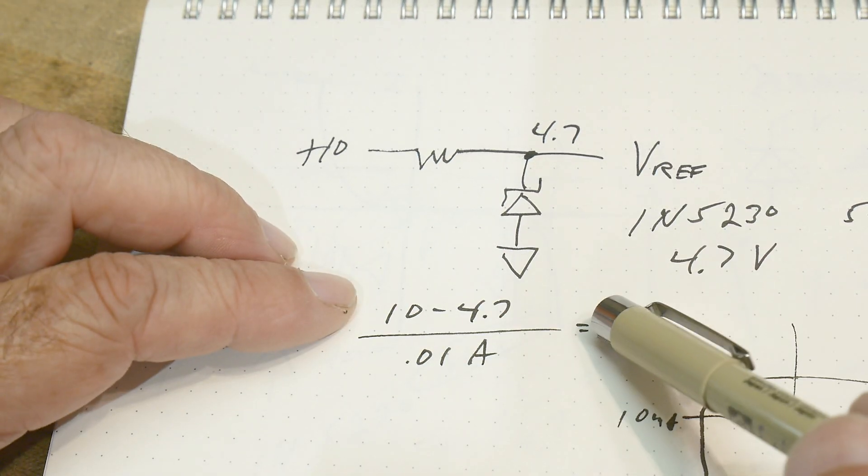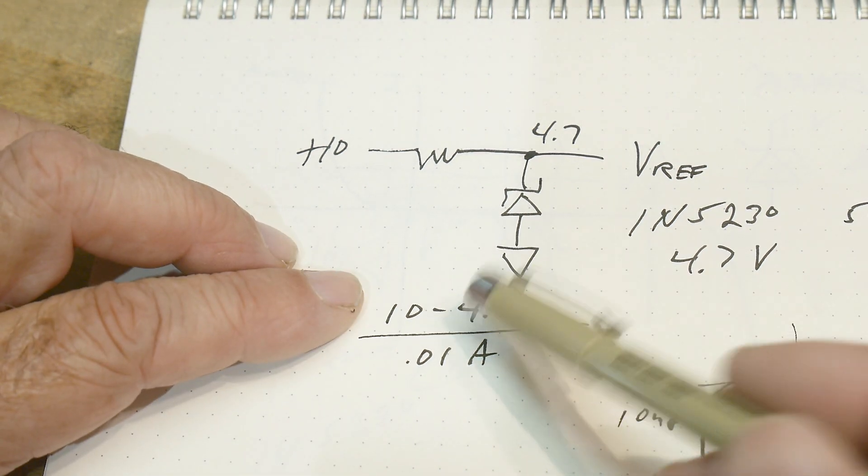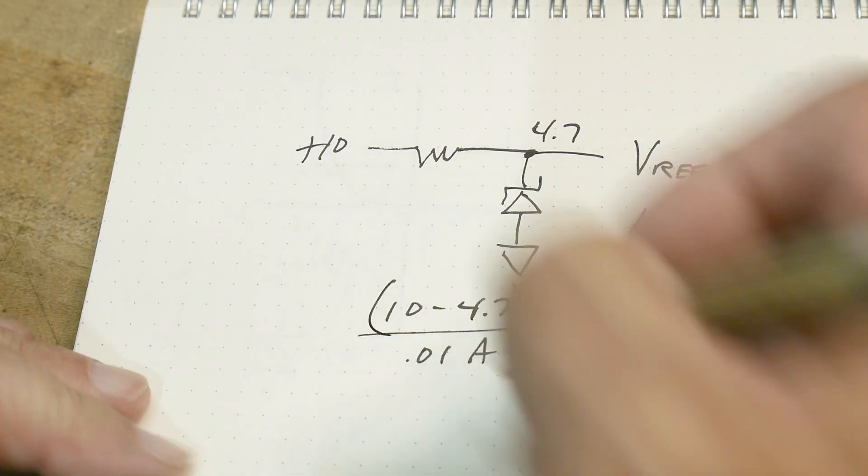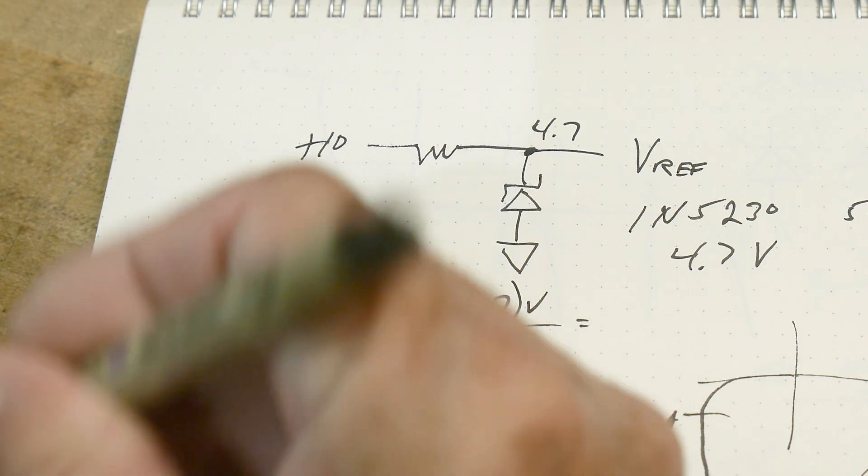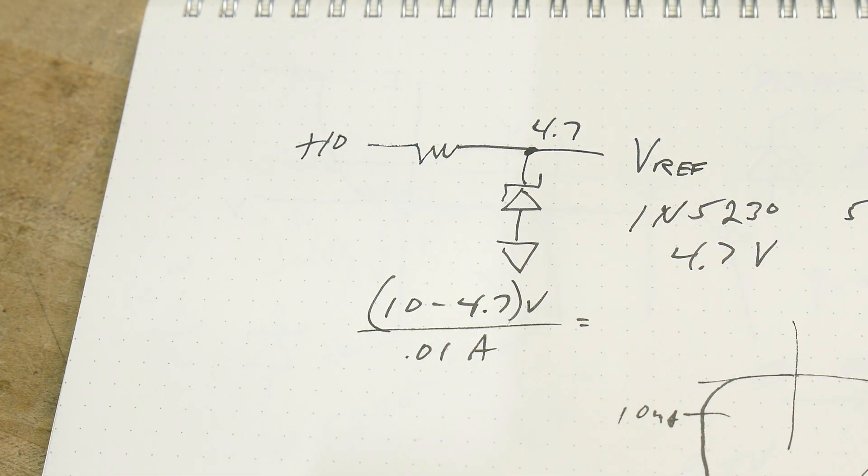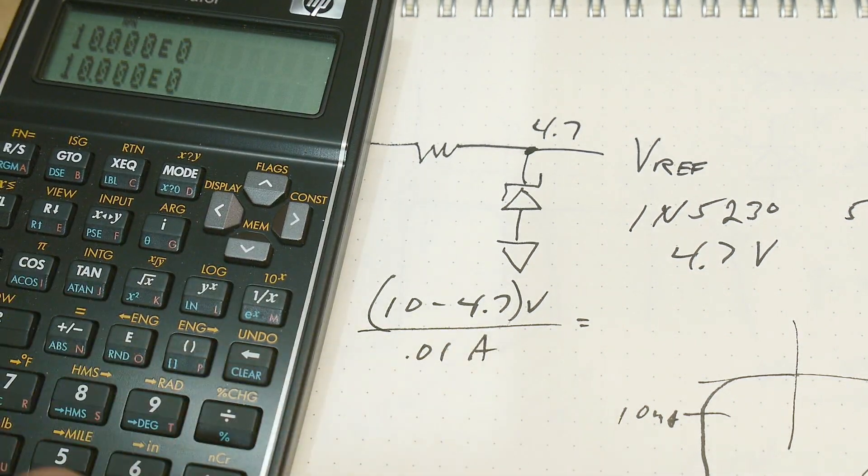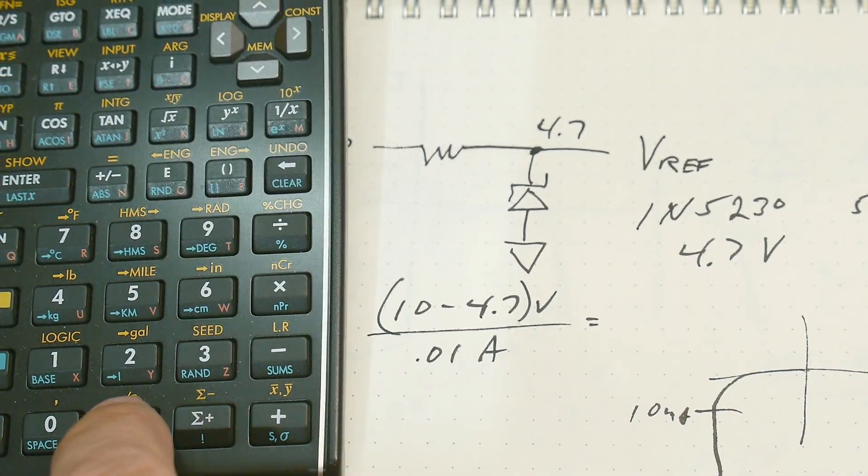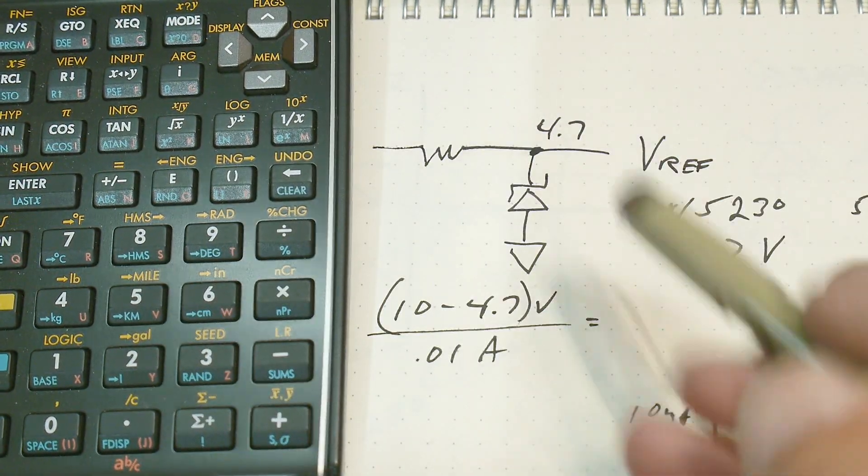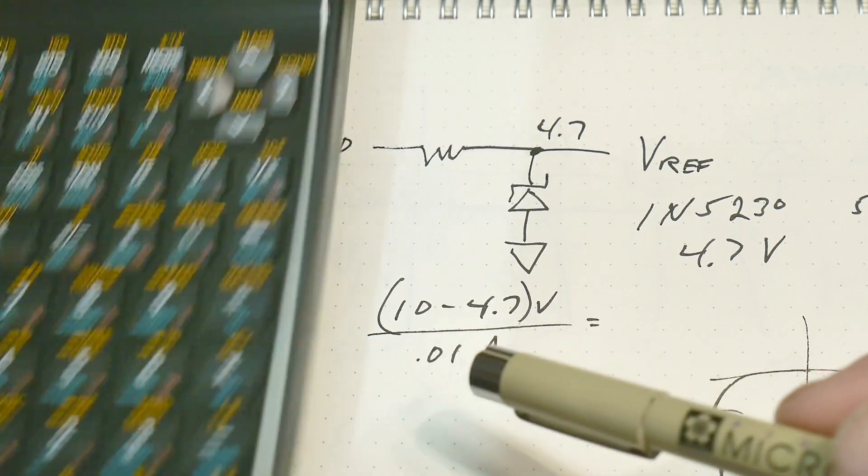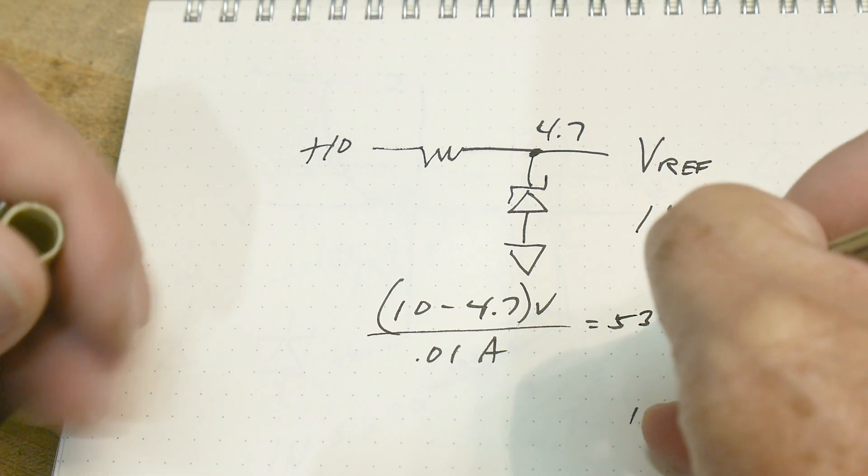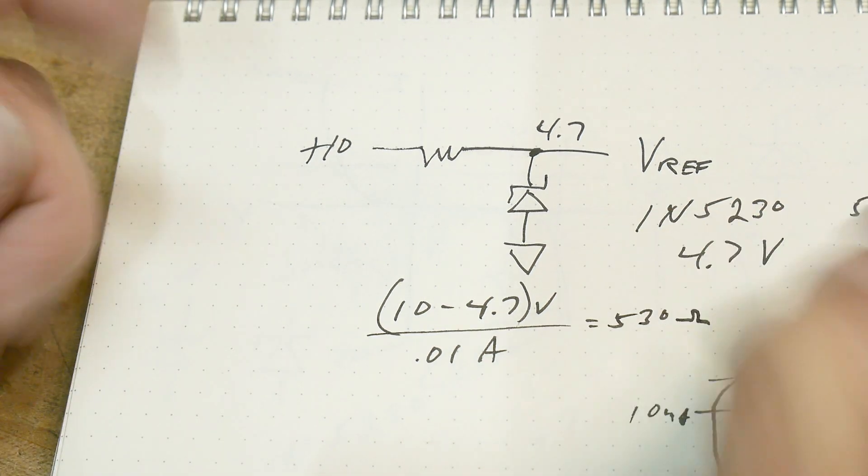Remember, voltage equals current times resistance. So voltage divided by current is resistance. Ohmage. Remember the ohmage. All right. All right. So let's do the calculation. 10, 4.7 subtract. So we're going to have 5.3 volts and we have 0.01 amps of 10 milliamps. Okay. We're going to get 530 ohms.